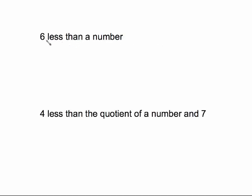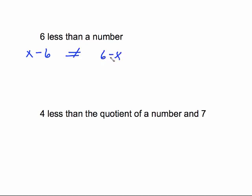'Six less than a number' — 'less than' tells you to translate backwards. We're in the habit of putting the six first because it came first, but as soon as you see 'less than,' go in reverse order: put the minus in front of the six and put x first. We are making the number six less than it already is, so we have x − 6. That is not the same as 6 − x.